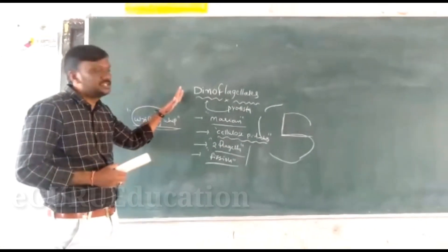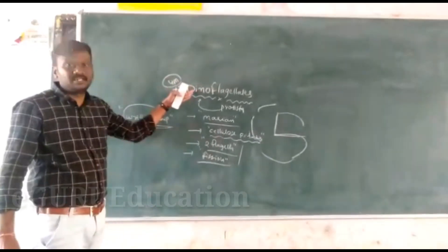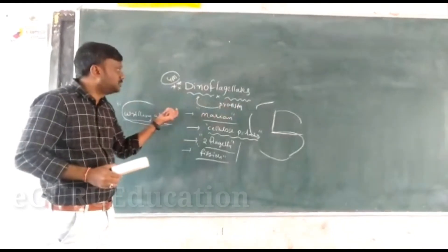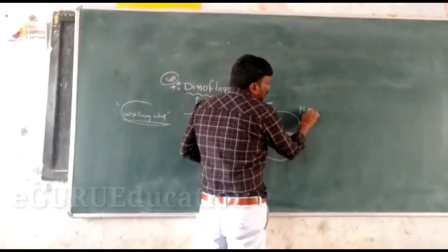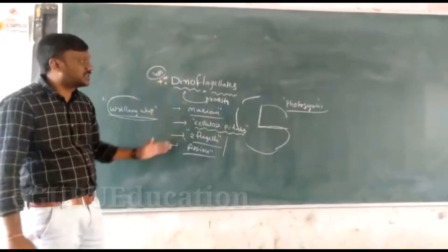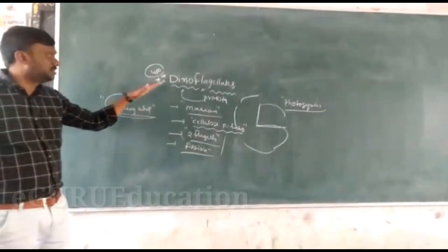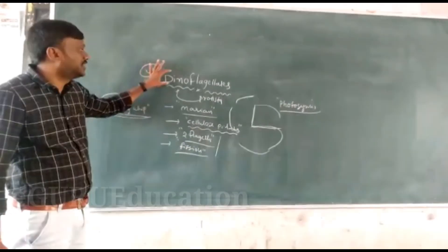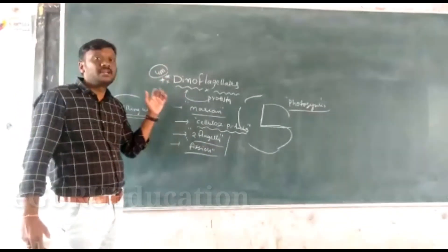So this is the total explanation of dinoflagellates. This is most important for your examination. The characteristic features of dinoflagellates: these are under the Protista, living in marine water, all perform photosynthesis, two flagella are present, and the movement is whirling. There is participation in sexual and asexual reproduction — fission, binary fission, and multiple fission. The best example is Gonyaulax, which produces red-colored toxins that affect fish.